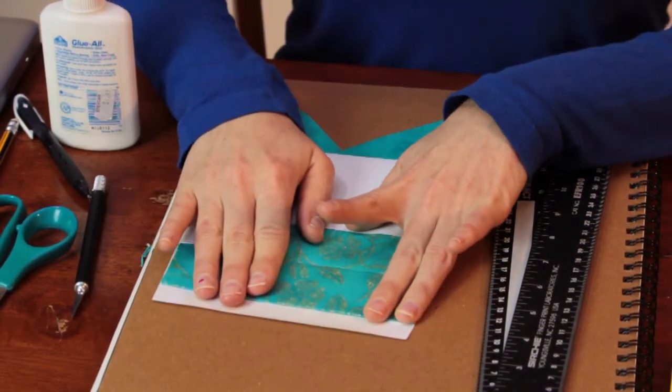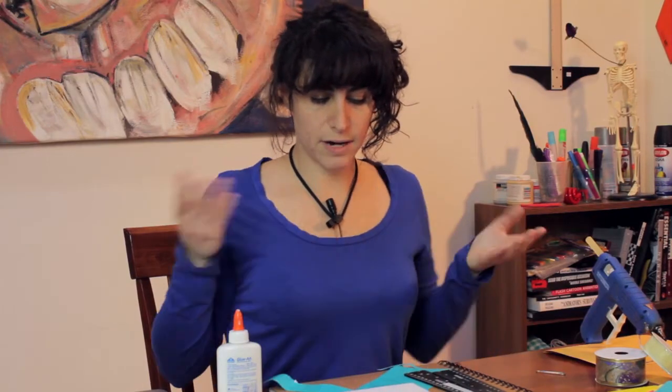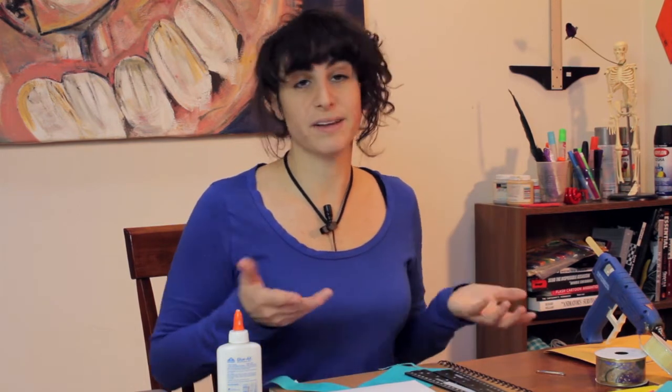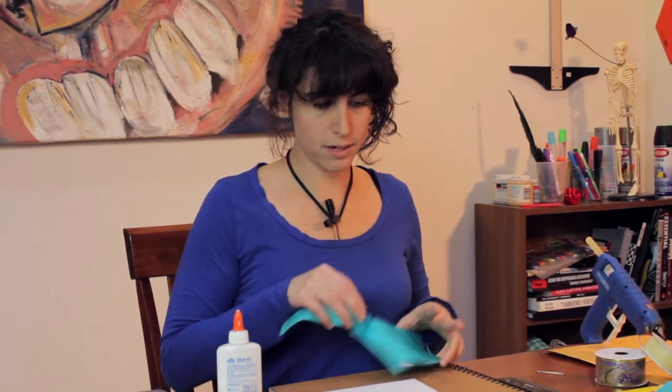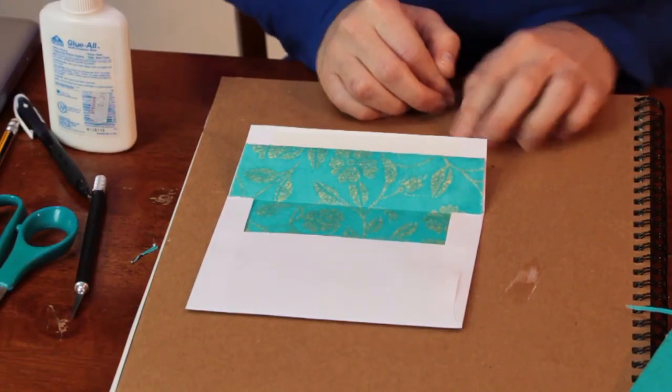And then you just let that dry, and you're ready to go. You have a very nicely decorated envelope. And then go ahead and decorate the front however you'd like with nice calligraphy or stamps or whatever you like to use. So that is how you decorate an envelope for mailing.